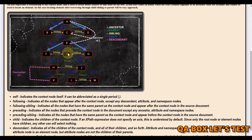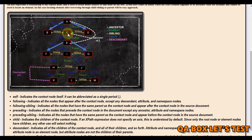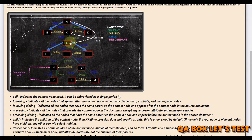For parent: the parent of 'i' is 'e', and in a tree a node can have maximum one parent. Node 'e' has got a parent 'c', and 'c' has got a parent 'a'. So for 'i', 'a' is a parent — and 'e', 'c', and 'a' are the ancestors.